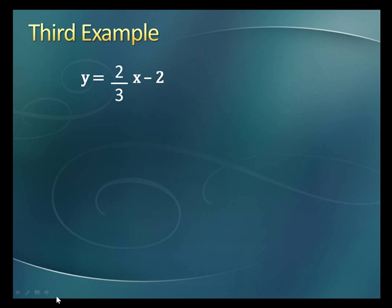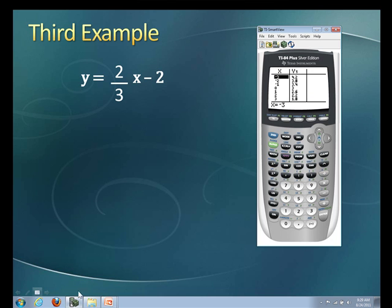Let's look at our final example. y equals 2 thirds x minus 2. And here's our calculator. It's still left to what we just did. So we're going to go into y equals and we're going to clear that out because we're going to put this new equation in. Nicely, it's already in the y equals mx plus b form, so we don't have to do anything.